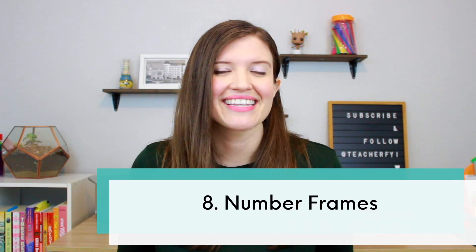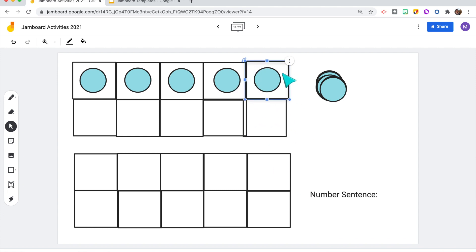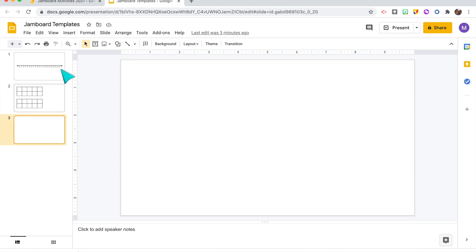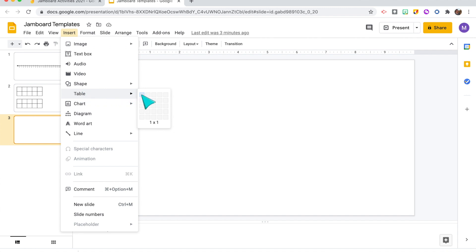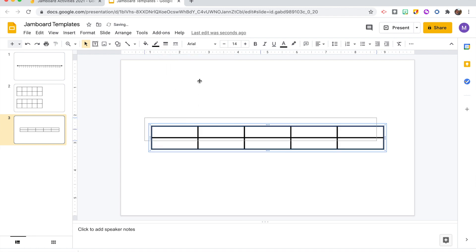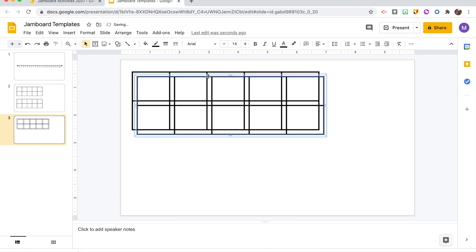The eighth way to use Jamboard for math is to create your own number frames. Jamboard makes it easy to customize number frames with a fun touch for students. You could make them entirely in Jamboard using the shape tool to create squares for a 10-frame, but that takes more time and students can drag the pieces away. I recommend creating your own table on Google Slides and inserting it as a background image. On Slides, click Insert Table, change the color and width of the lines, copy the table and paste it below, then go to File, Download as an image.